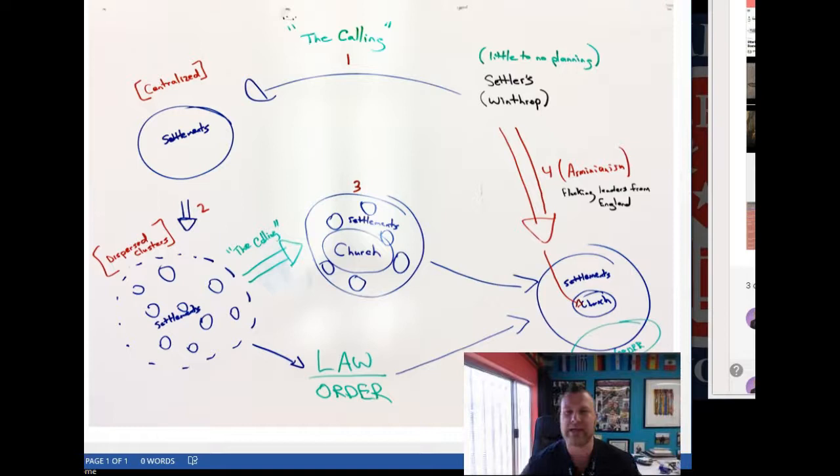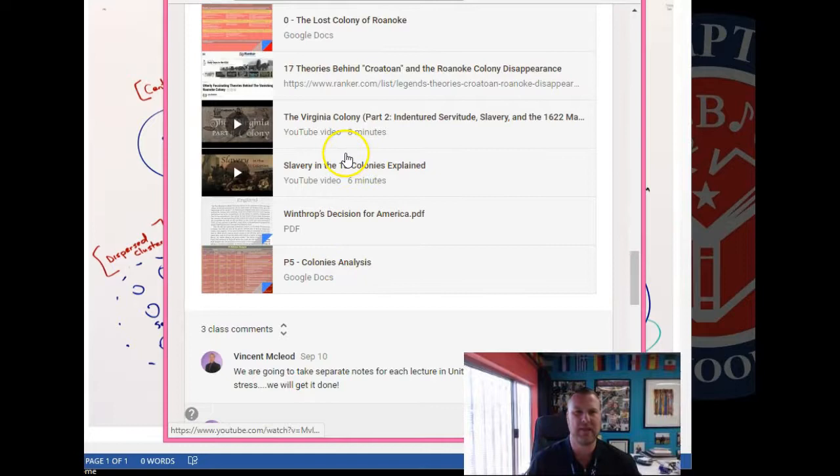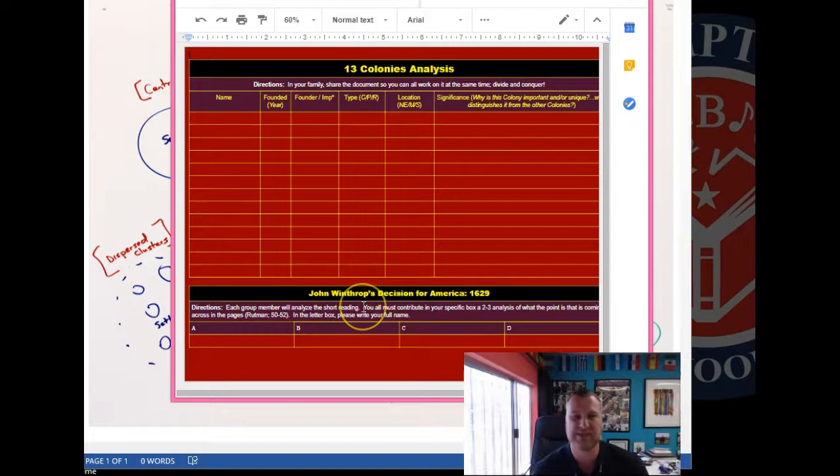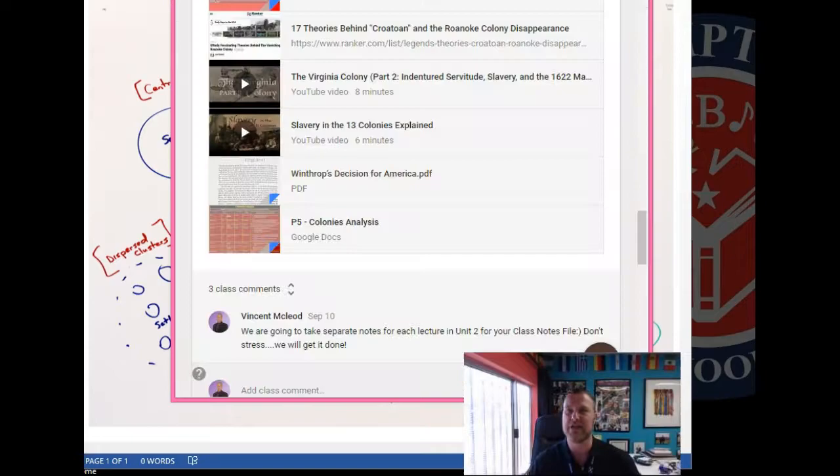Hey guys, I'm back again. So I wanted to go over something quickly about John Winthrop and his decision for America. I know we glanced over it a little bit. So for example, if you were to go to your classroom, one of the worksheets was this, 13 colonies and the analysis. And at the bottom it said John Winthrop's decision for America, 1629.